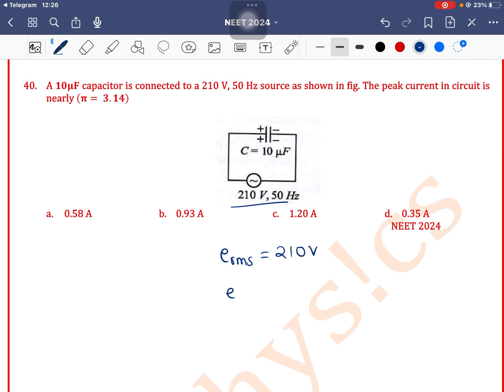From this we can find E0, that is peak value, which is equal to root 2 into ERMS, which is equal to root 2 into 210 volt.